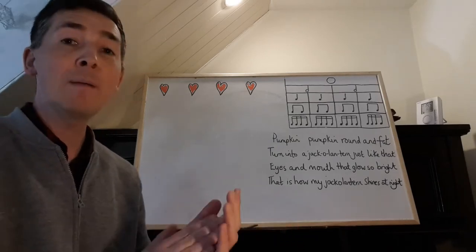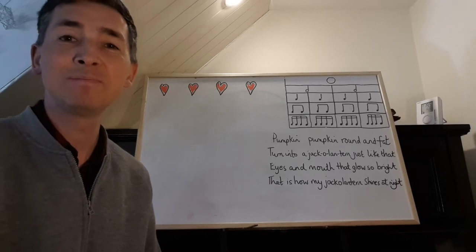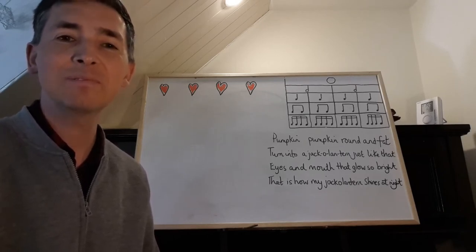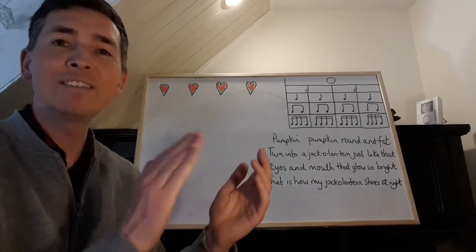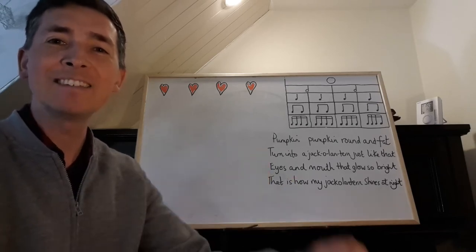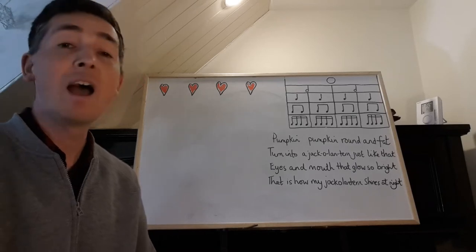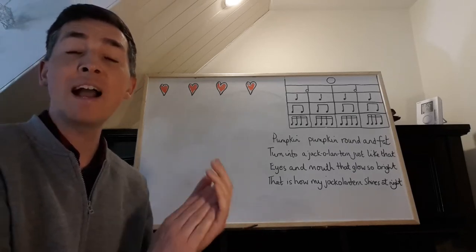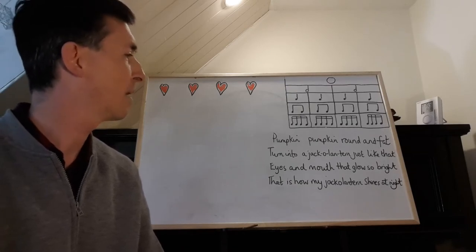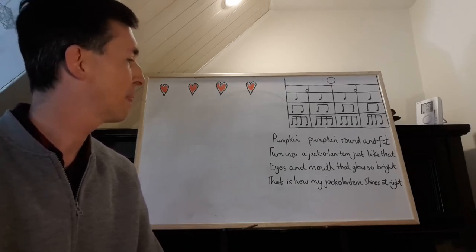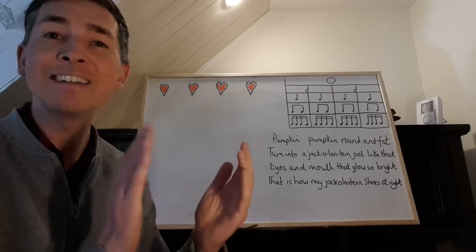Pumpkin, pumpkin, round and fat — turn into a jack-o'-lantern just like that. Eyes and mouth that glow so bright — that is how my jack-o'-lantern shines at night.